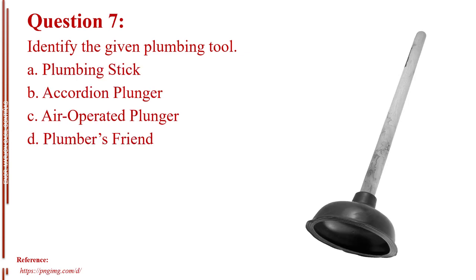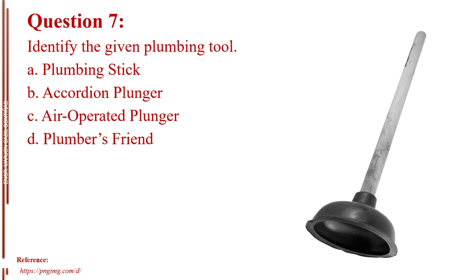Question number seven. Identify the given plumbing tool. Letter A, plumbing stick. Letter B, accordion plunger. Letter C, air operated plunger. Letter D, plumber's friend. The answer is Letter D, plumber's friend.